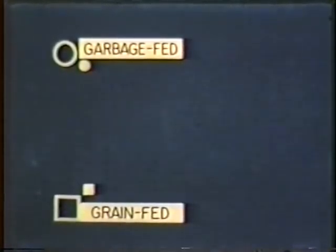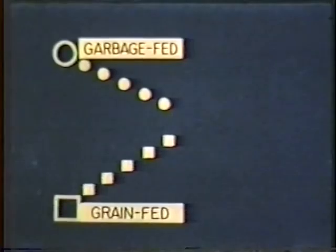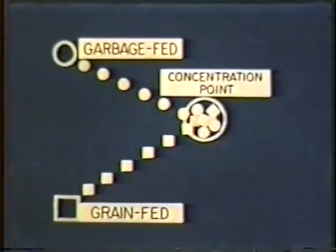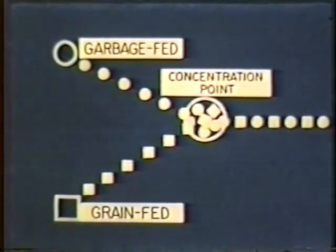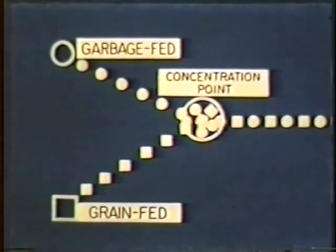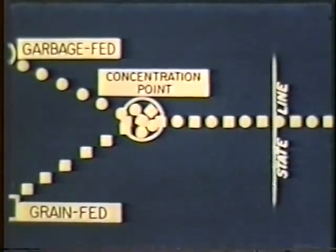Healthy grain-fed hogs from another area are also going to market. They join at concentration points or stockyards, where the mixing of shipments permits garbage-fed VE-infected hogs to lose their identity as such. By the time the shipment reaches its destination, the disease has broken out and the previously healthy grain-fed hogs are now infected. It is practically impossible to sort grain-fed from garbage-fed hogs, making it impracticable for stockyards to keep them separated. That is why the program to control and eradicate VE must start with garbage-fed hogs before they go to market.